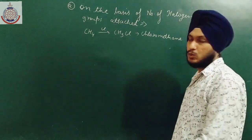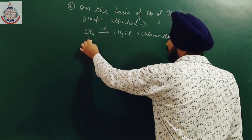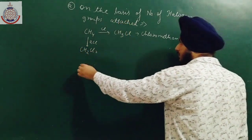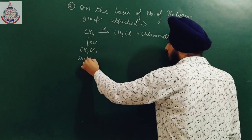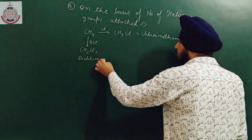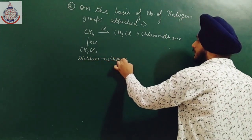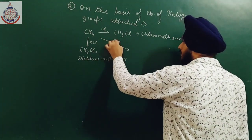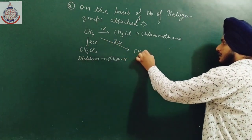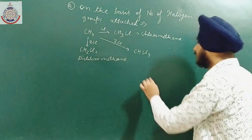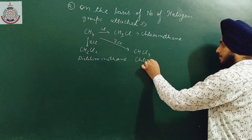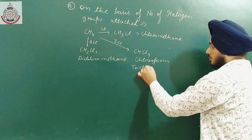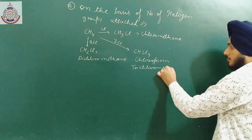If I replace two hydrogen atoms with chlorine, we get CH2Cl2, known as dichloromethane. Similarly, if I replace three hydrogens, we get CHCl3. The common name for this compound is chloroform and the IUPAC name is trichloromethane.